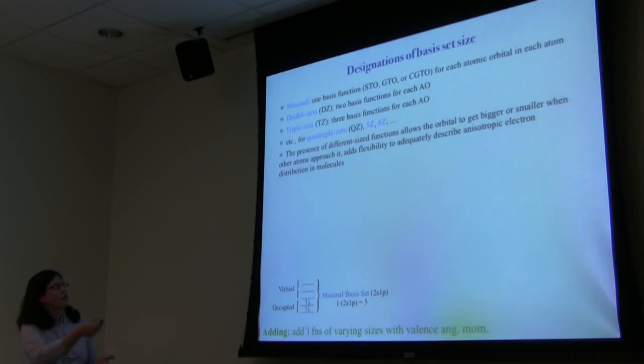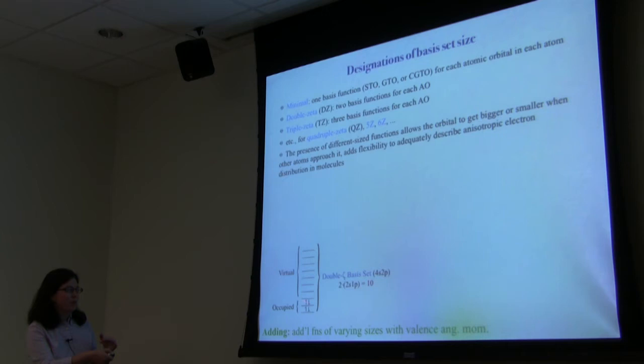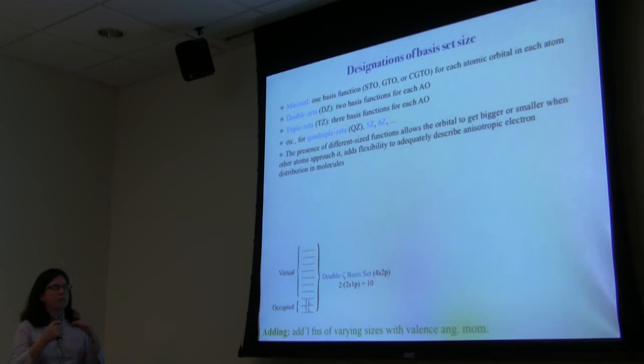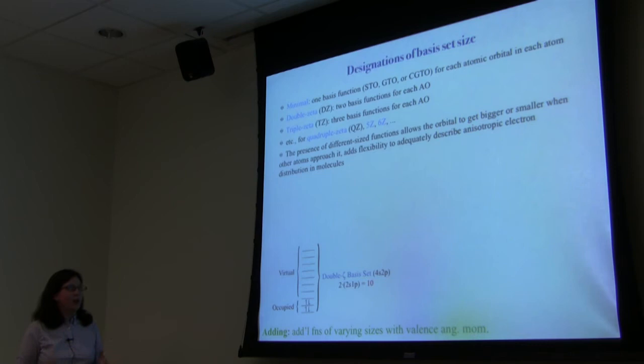The next step is a double-zeta basis set, where you have two basis functions for each atomic orbital. You double the 2s and 1p to get 4s/2p — ten orbitals total, with the same number occupied but significantly increased virtual space. This increase allows the orbital to get bigger or smaller when other atoms approach, responding to the chemical environment and adding flexibility to point along bonds. This gives a far more accurate calculation than the minimal basis set.